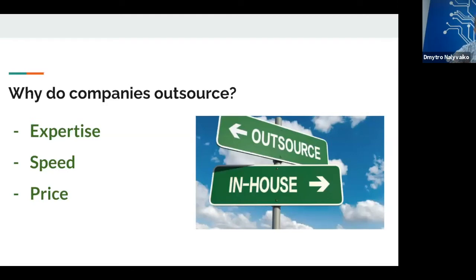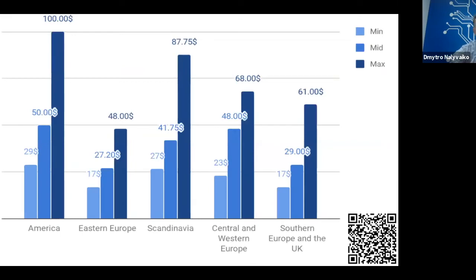In particular, we have conducted a research at Axon and compared prices in different regions. So, you can see that Eastern Europe's prices are much lower than in other regions. Also, here is a QR code on the bottom. You can scan and see the full research. And I'll share the link to this research after my presentation, so you will be able to take a look.